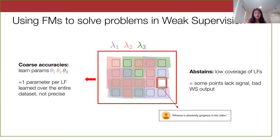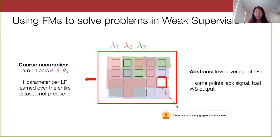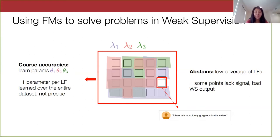For the second challenge, notice there's a data point that none of the three labeling functions cover. We say the labeling function abstains on it and has low coverage — none of the keywords like 'checkout', 'love', 'subscribe' appear in that comment. As a result, when we give the weak supervision model this point, we don't have votes from the weak sources, so the model will be pretty uncertain and is more likely to output a wrong label.